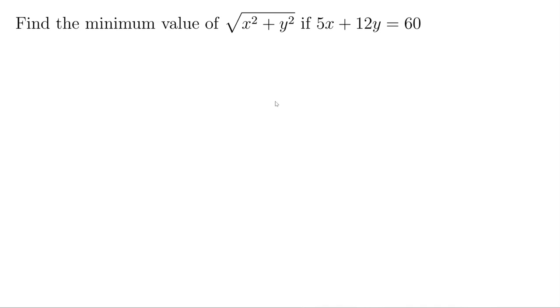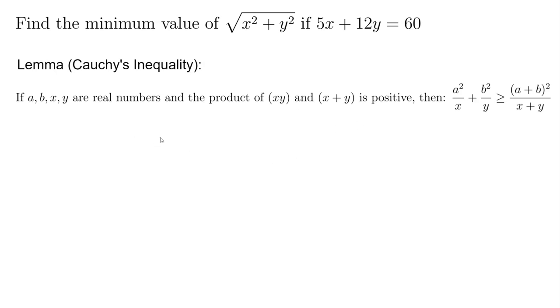First we're going to look at one form of Cauchy's inequality. There's a famous one but there's other ones that is less famous but it's also very useful. In this case we want to use this form. So if we have a, b, x, y real numbers and the product of xy and x plus y is positive, if we have that then we have this inequality: a² over x plus b² over y is larger or equal to (a+b)² over (x+y), and the equality happens if and only if a over x equals to b over y.